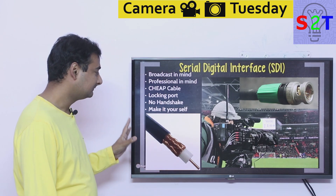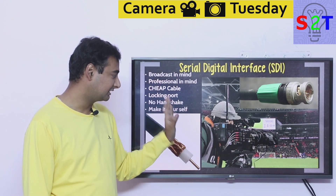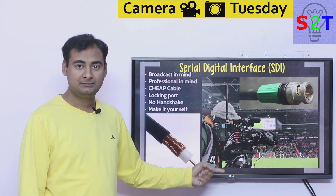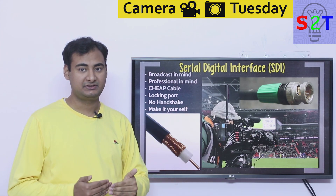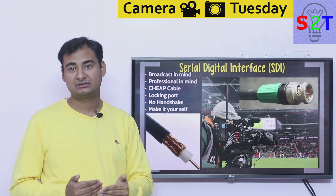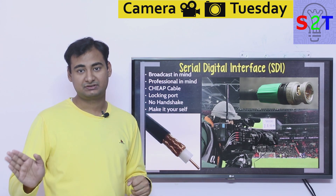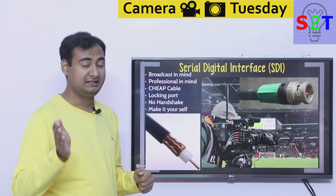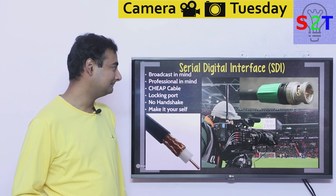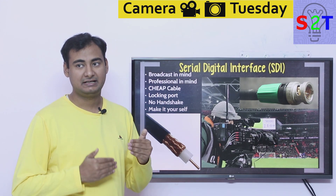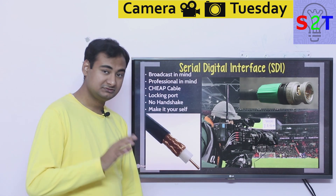If you see a broadcast camera with four BNC connectors, understand there are layers upon layers of redundancy built in. Even if one cable pulls off, you won't even notice. Even if three fall off, it will still work. Every aspect of it is built with professional use in mind.